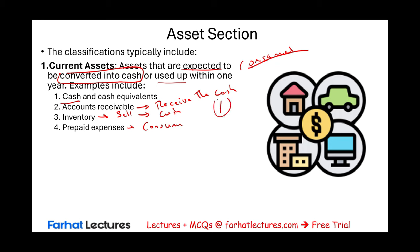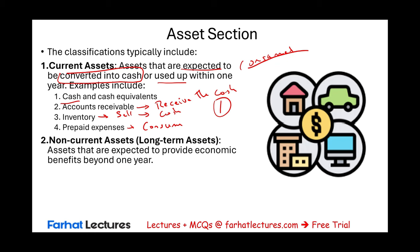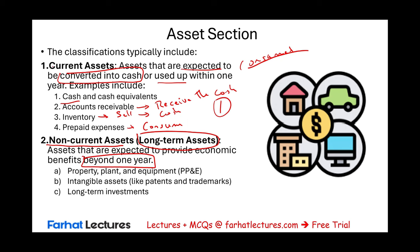The second classification is non-current or long-term assets — those expected to provide economic benefit for more than one year. In some textbooks and CPA review courses, rather than grouping everything under 'non-current,' they break it into subcategories: current assets, property, plant and equipment, intangible assets, and long-term investments. Property, plant and equipment; intangible assets; and long-term investments are all non-current, whether listed separately or grouped together.